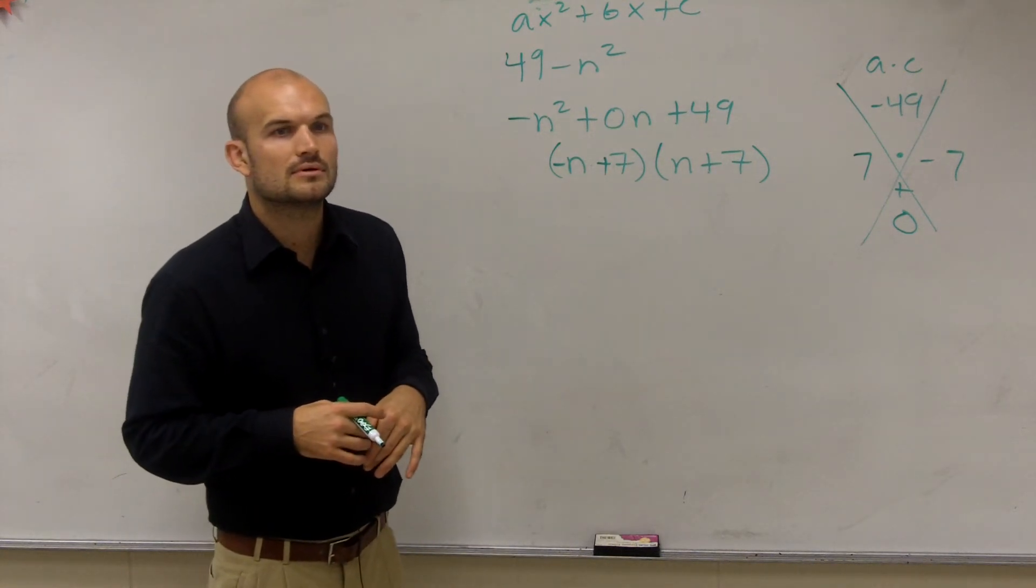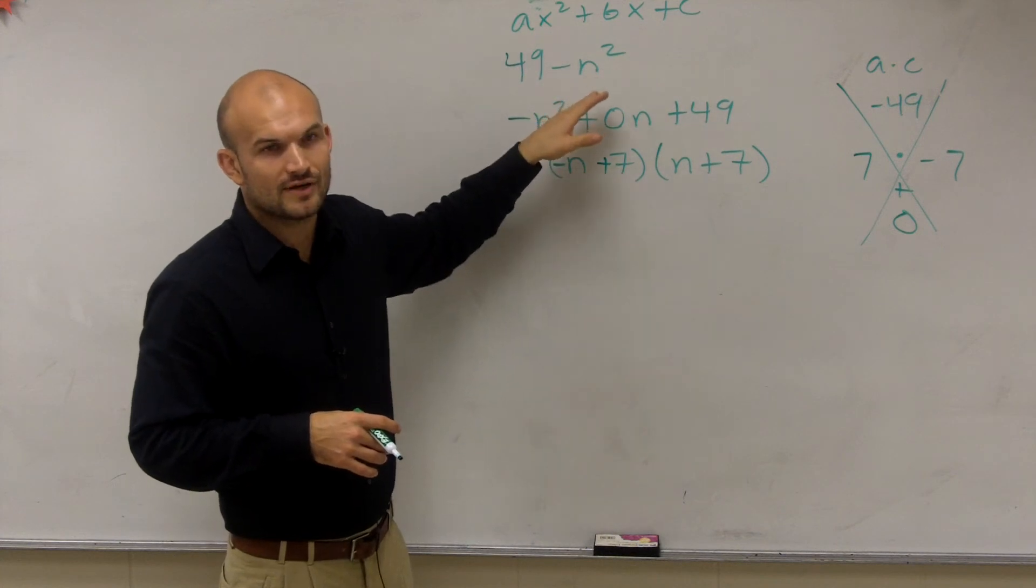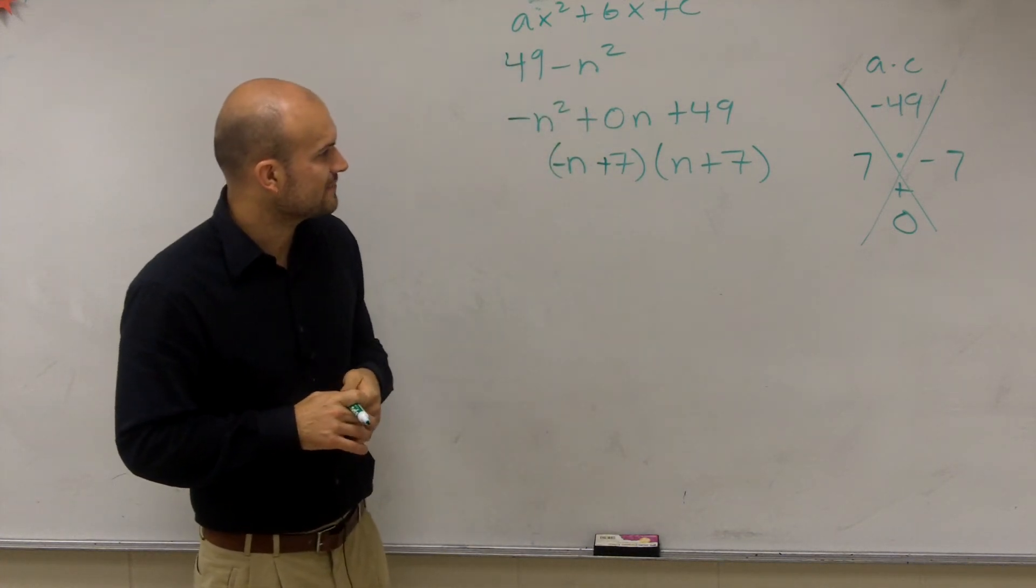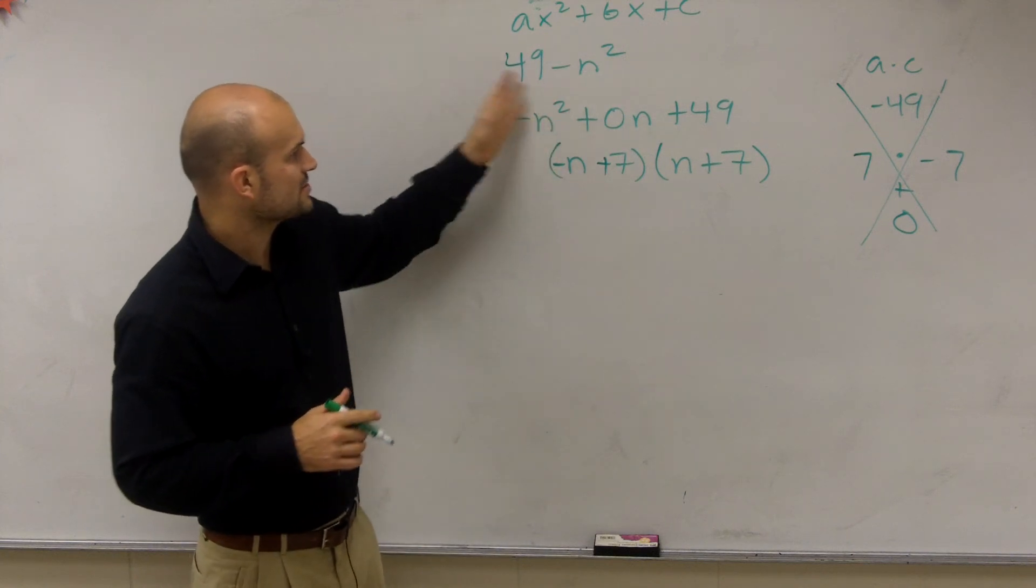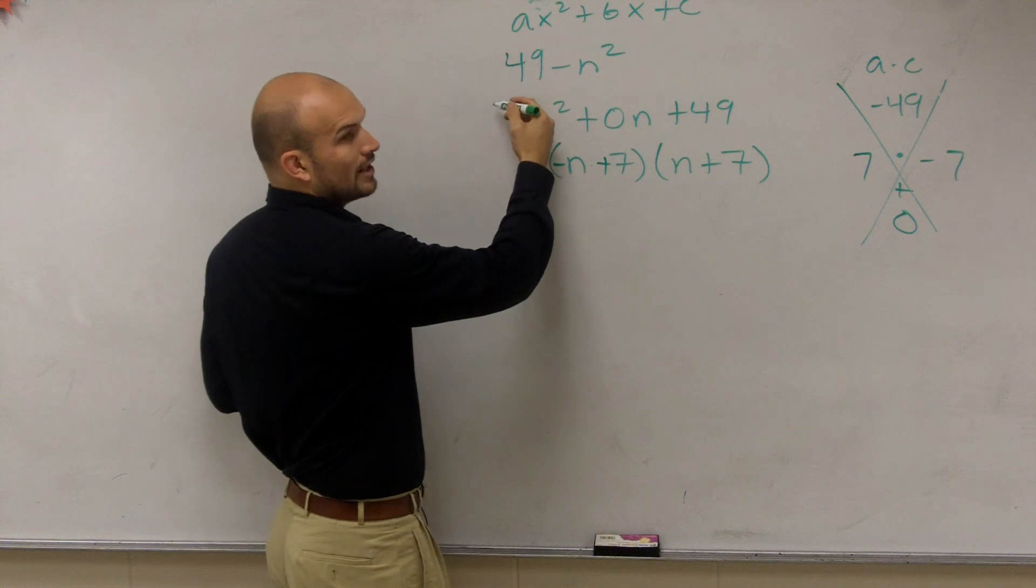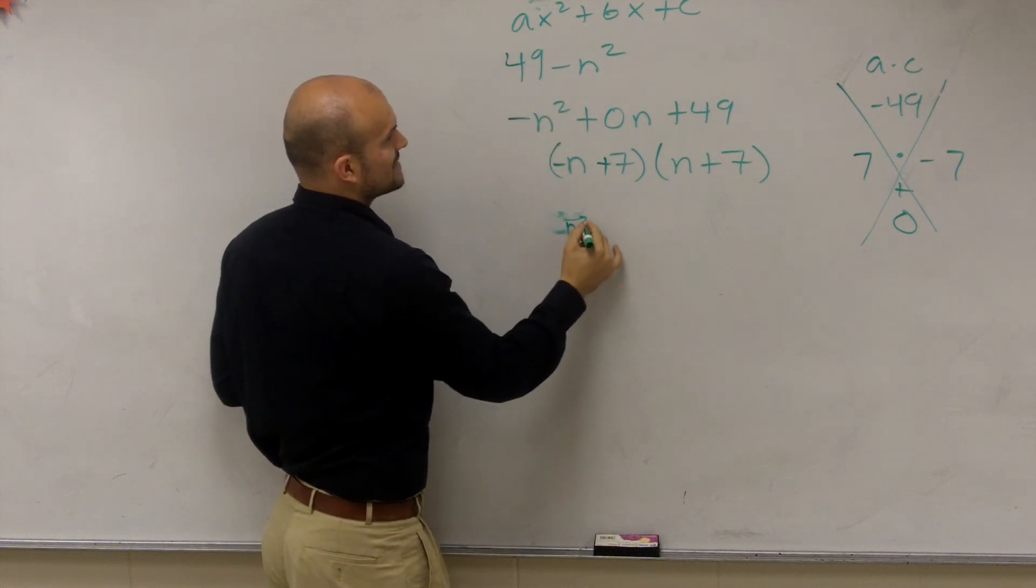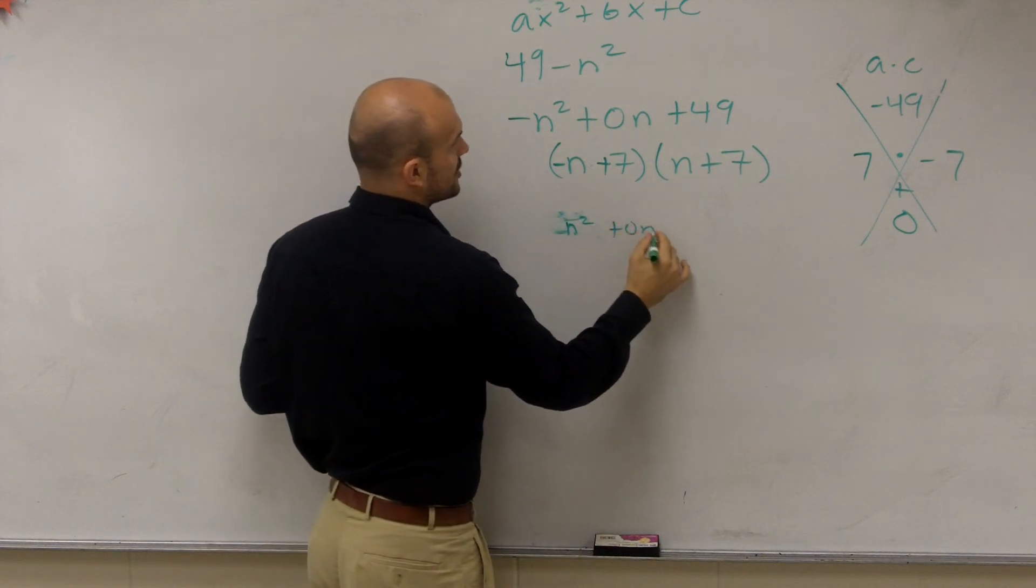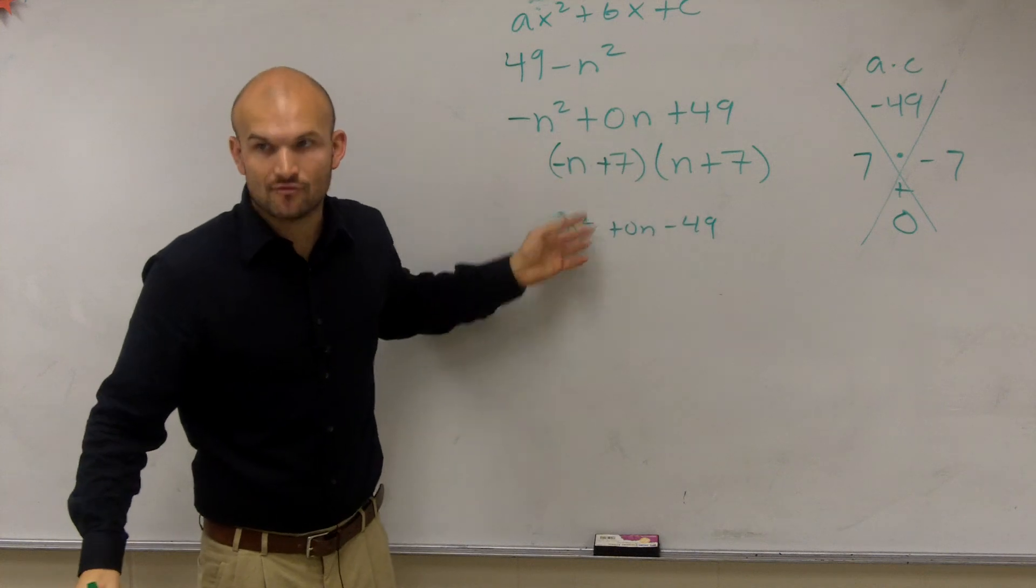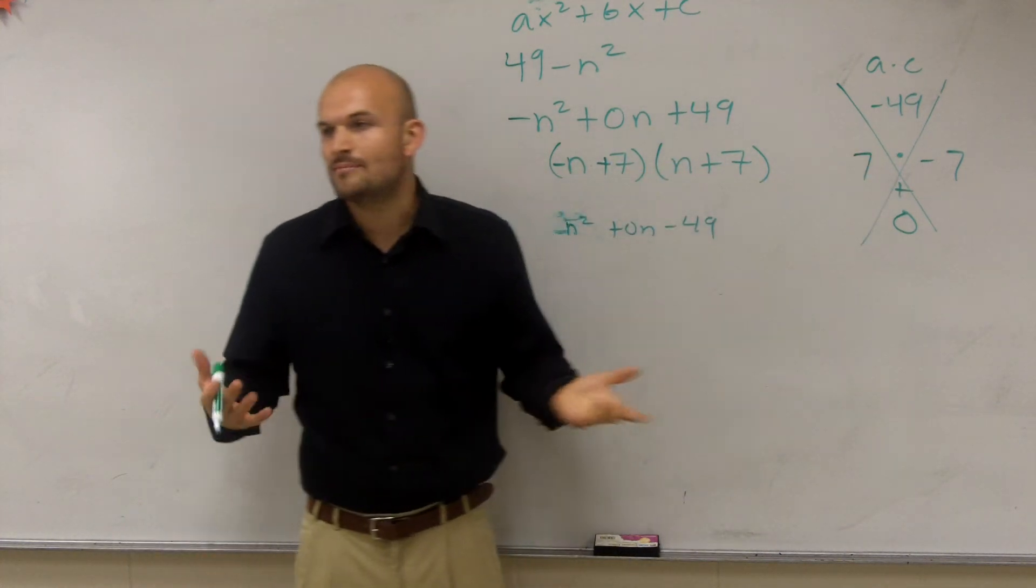you guys can also factor out a negative 1 out of here to look at it to give you a different solution. But if you guys also factor out a negative 1, you get the same. If you guys factor out a negative 1, you would get negative, if you factor out a negative 1, you get n squared plus 0n minus 49. So you could also factor out a negative 1, and then you could use those factors, n plus 7 and n minus 7.